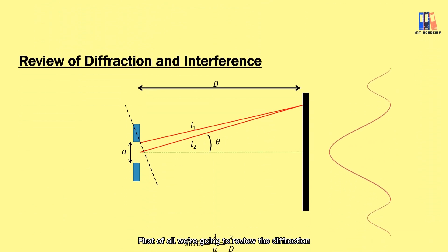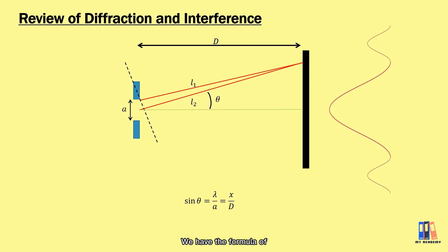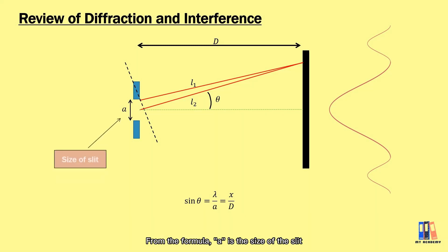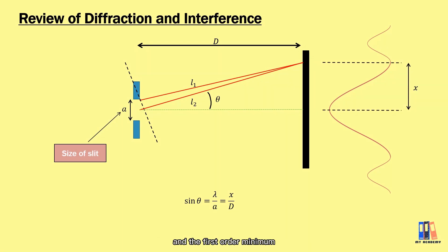First of all, we're going to review the diffraction. This is something that I have discussed before. We have the formula of sin θ = λ/a = x/D. From the formula, a is the size of the slit and x is the distance between the central maximum and the first order minimum, or the first dark fringe.